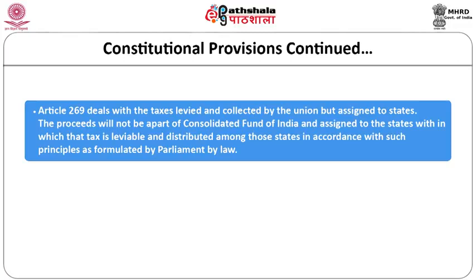Keeping in view certain peculiar situations of certain states regarding certain activities, parliament has made law under Article 269 so the Government of India can collect those taxes. If the government wants to give certain relief or concessions, these can be allocated — this operational provision was made to smoothen the tax structure and the mechanism to collect taxes and allocate proceeds to the states.